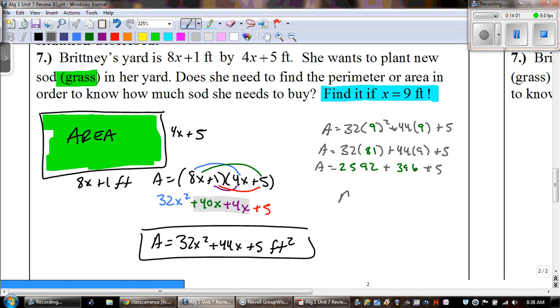The next step would be multiplication. So, we have to do 32 times 81. Which is 2,592 plus 44 times 9. Which is 396 plus 5. So, when we're done with that and we add all those numbers up, you should get a grand total of 2,993. And remember, we're talking about area. So, it's feet squared. So, we had two answers for number 7.